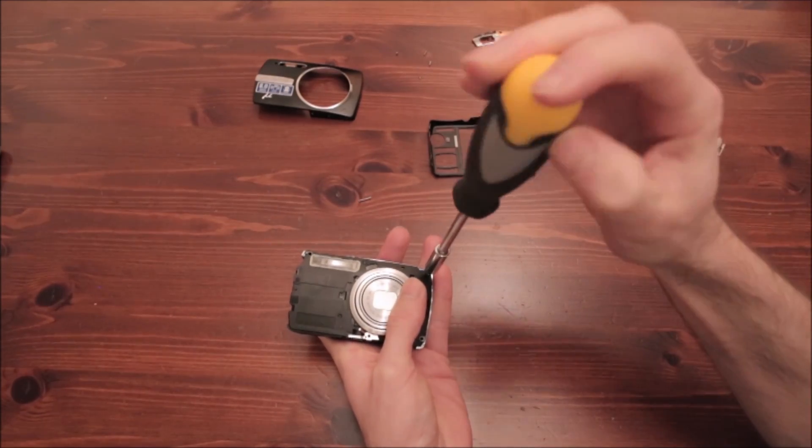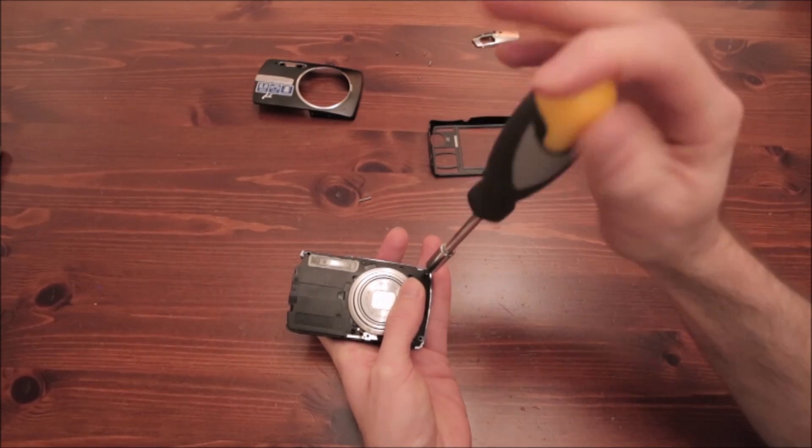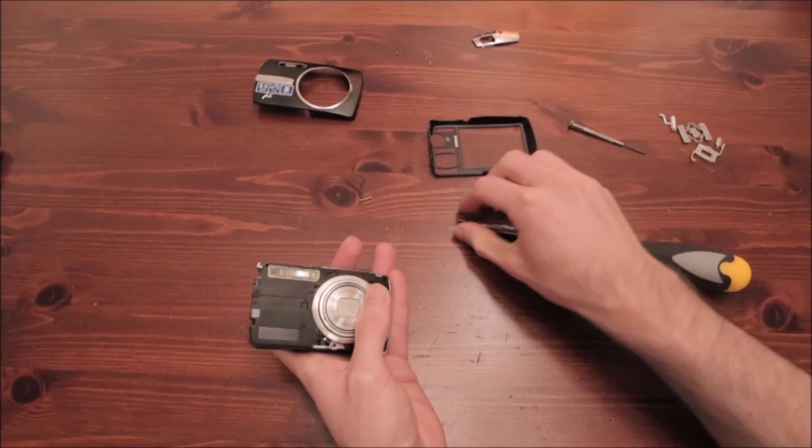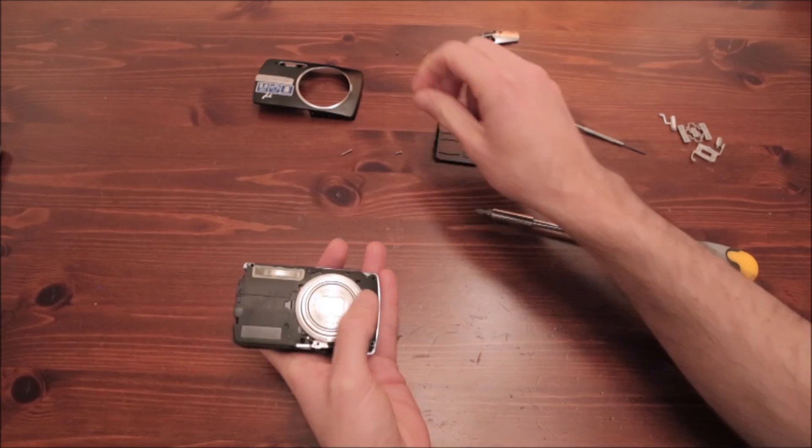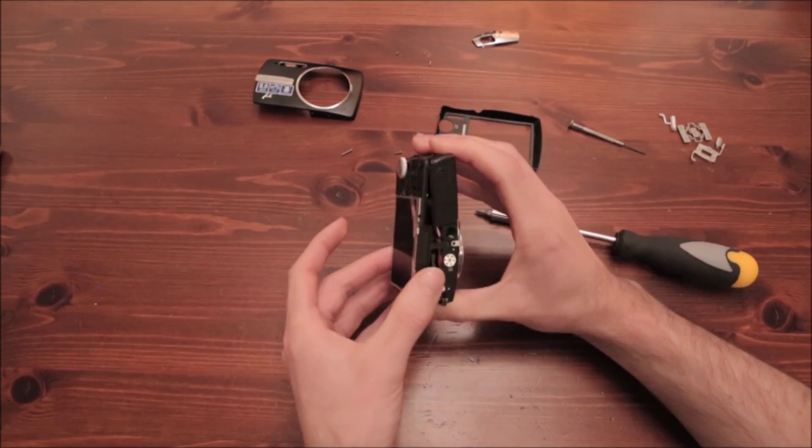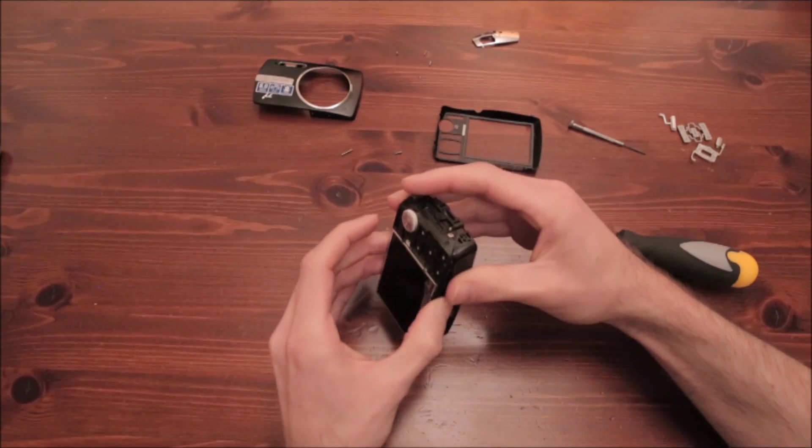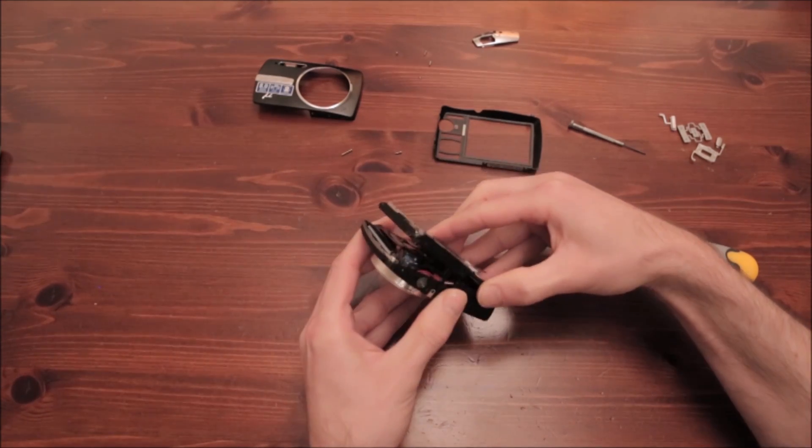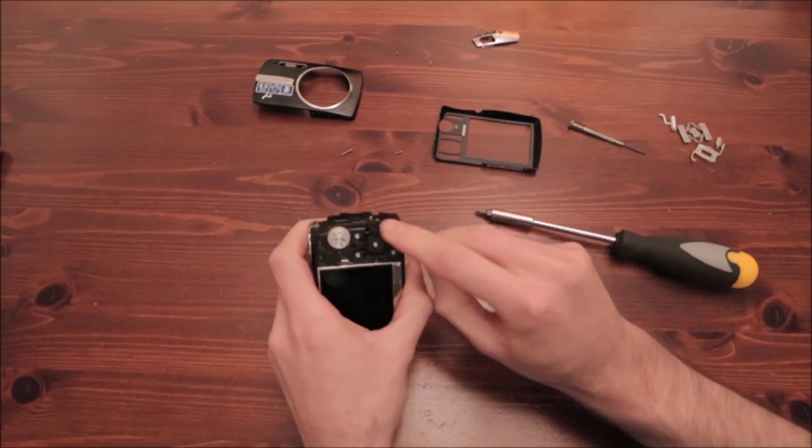Once you try to open the camera, be careful and take it slowly because it can be quite difficult. Sometimes there are hidden screws like the one you'll find now on the right, so you have to unscrew it, and don't be impatient—take it easy and slowly.